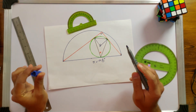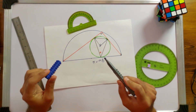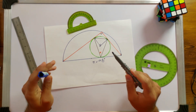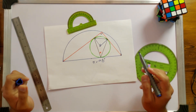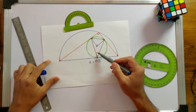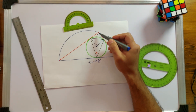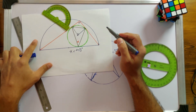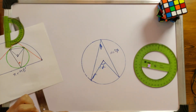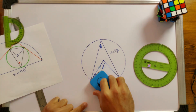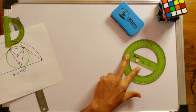That was the first approach for finding angle X using the angle at the circumference and center theorem. There is also another theorem called the Alternate Segment Theorem, and we can also find X using that approach.